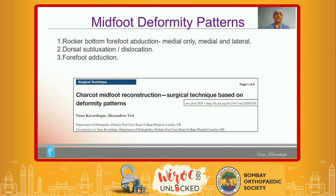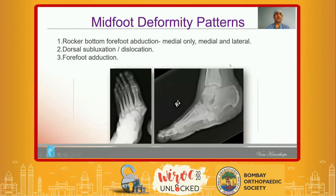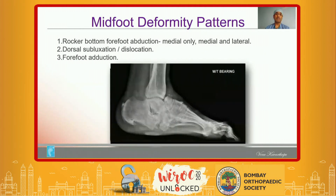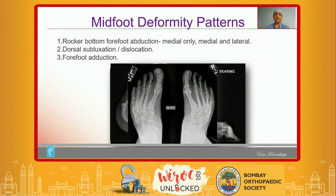By and large, there are three patterns of midfoot deformities we normally see. The rocker-bottom forefoot abduction pattern — the rocker-bottom can involve just a medial column or both medial and lateral columns, and the forefoot goes into abduction in that pattern. A different pattern is a dorsal subluxation or dislocation type. And the third one is the forefoot adduction pattern, which is much less common and is due to failure of the lateral column.